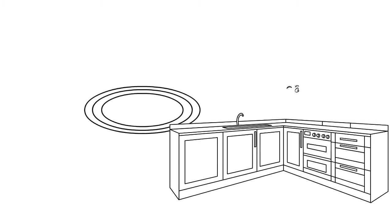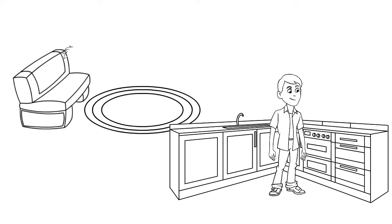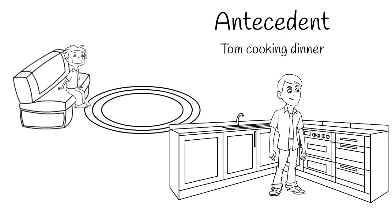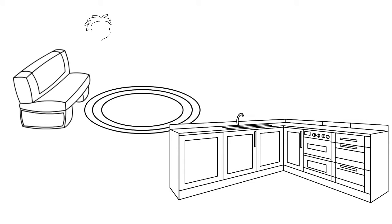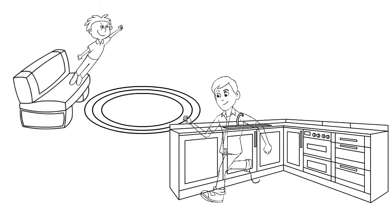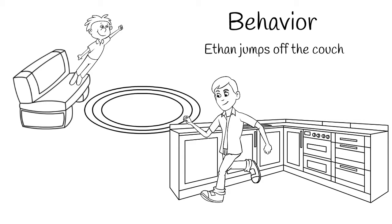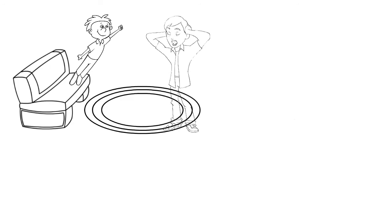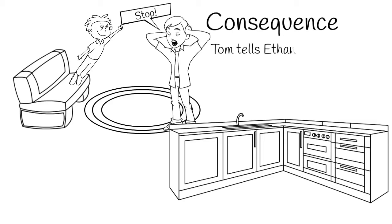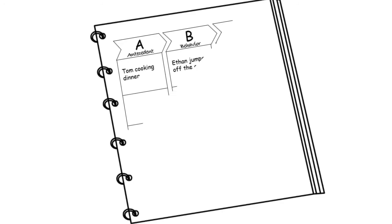Tom has his first chance to record the data when he's making dinner. From the kitchen, he hears Ethan jumping on the couch. Tom runs into the living room and tells Ethan to stop. Once Ethan is safe, Tom takes a minute to fill out the ABCs in the template he had left on the counter.